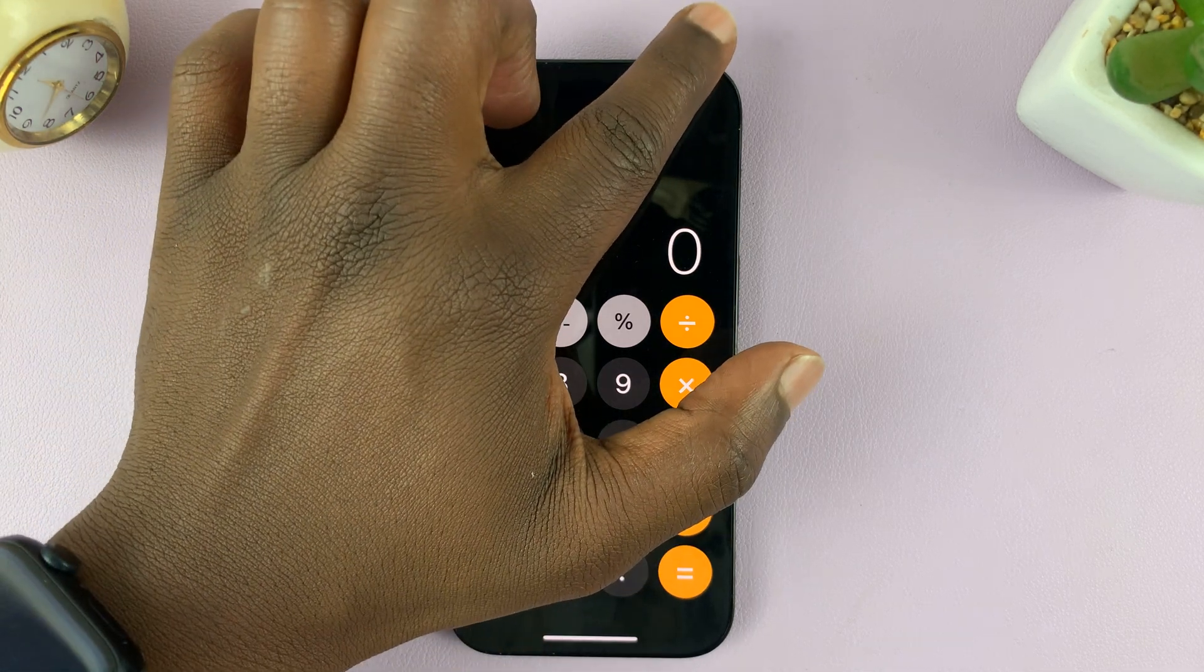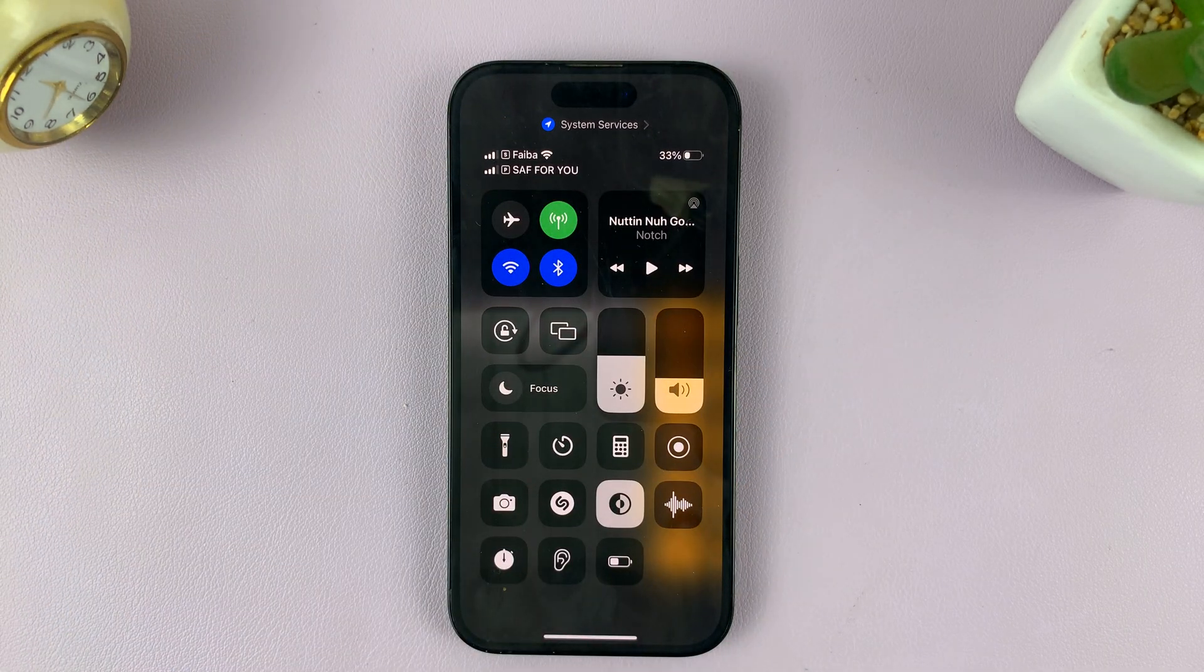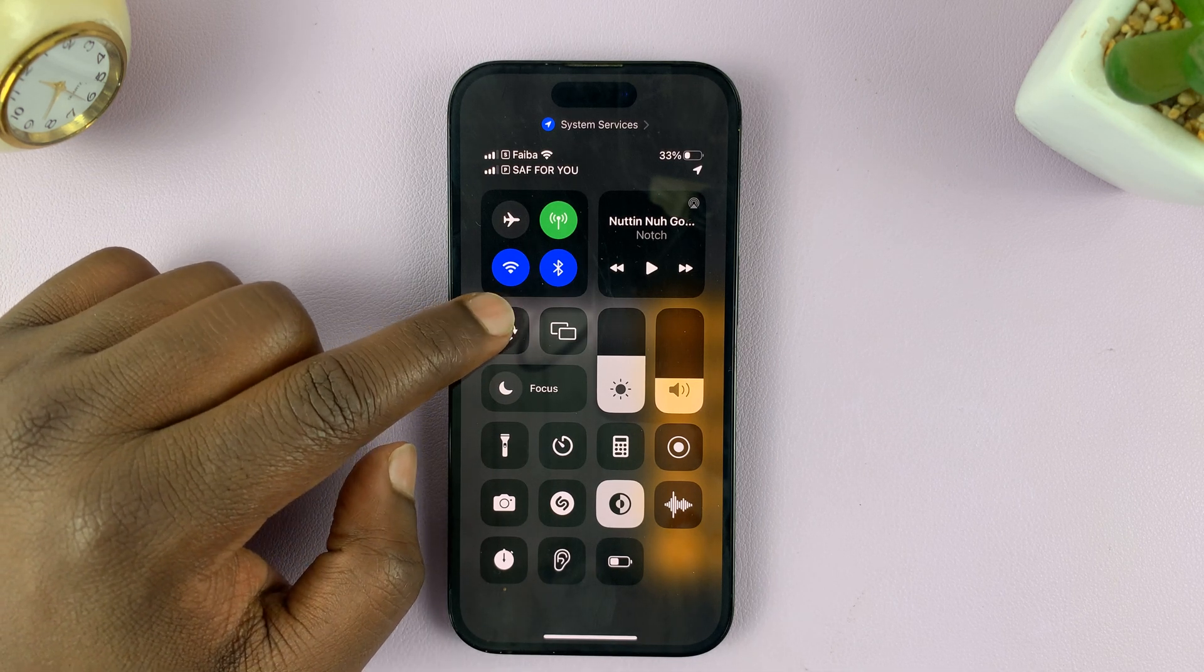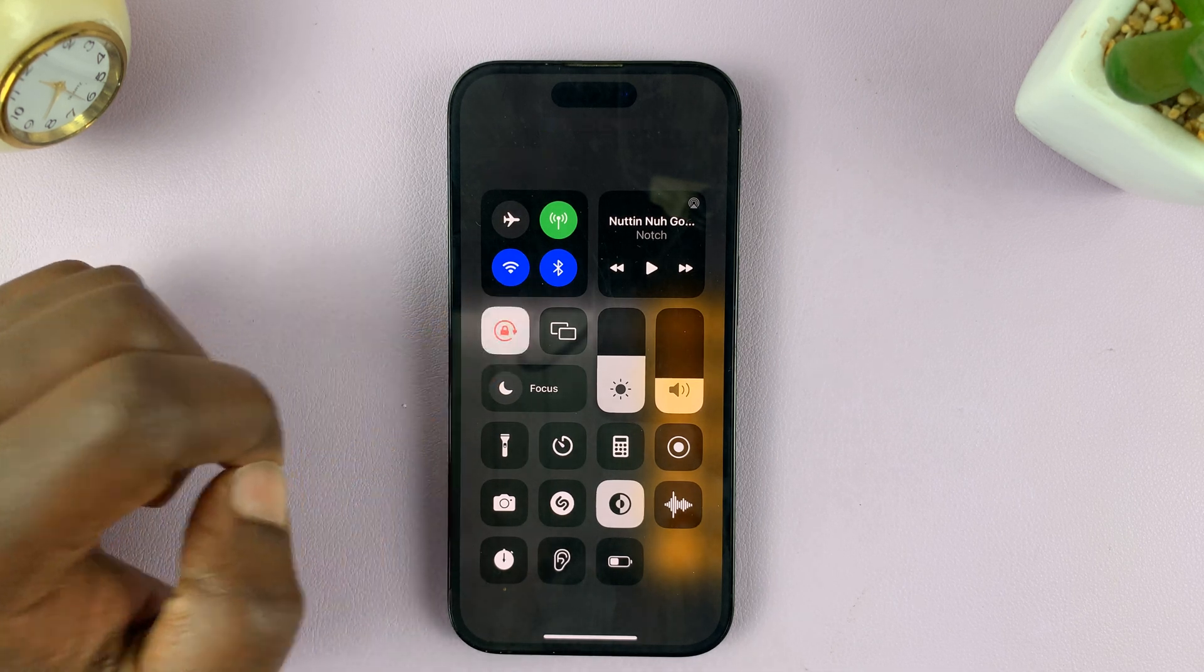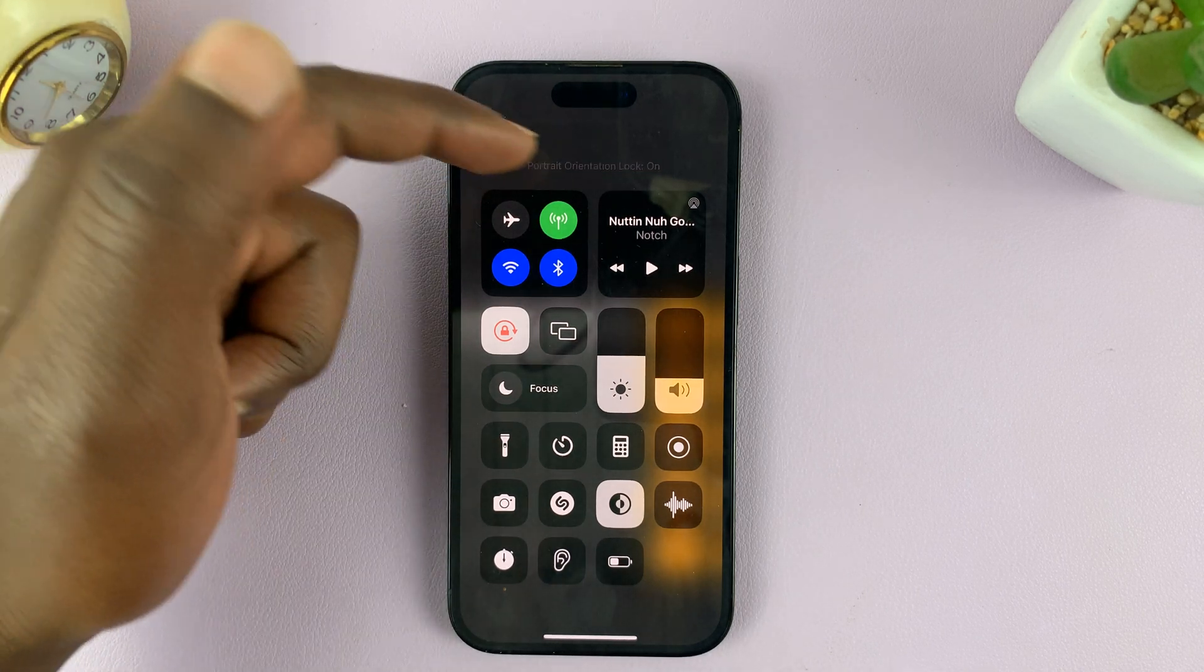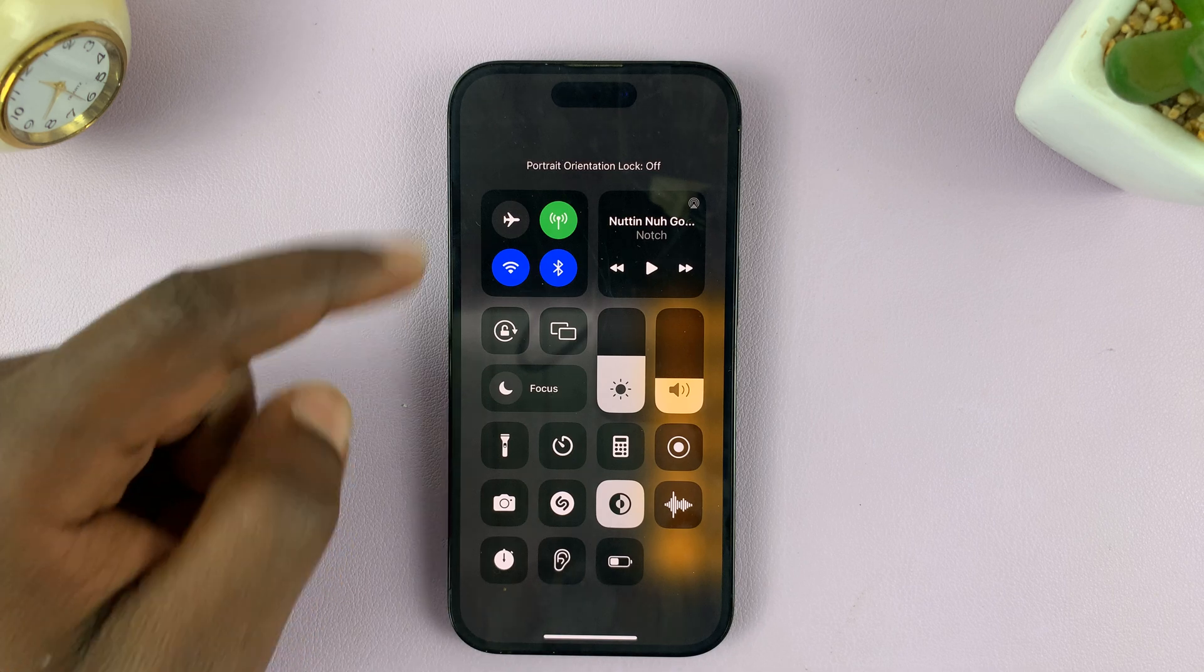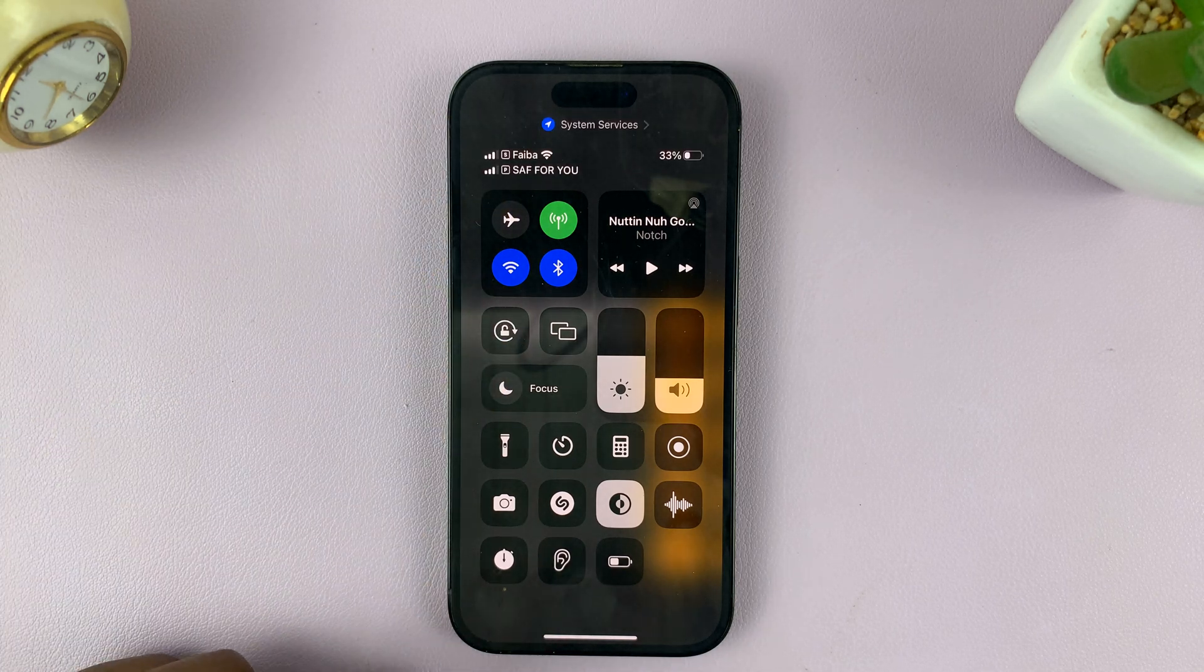And then you want to go into the control center by swiping down from the top right corner of the screen. And then make sure landscape mode is enabled. If it's disabled, it looks like that. It says portrait orientation. Once you enable landscape mode, it's going to be white like that.